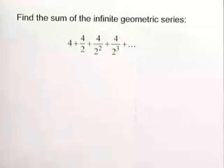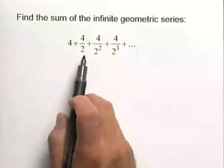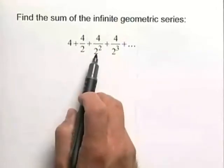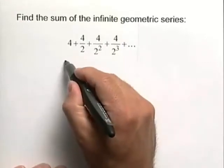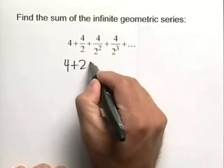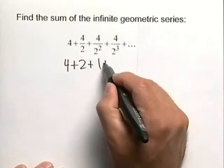Now let's find the infinite sum of the geometric series. We have 4 plus 4 over 2 plus 4 over 2 squared plus 4 over 2 cubed, and this is written in a way that you can recognize a pattern. But in essence we have 4 plus 2 plus 1 and so on and so forth.